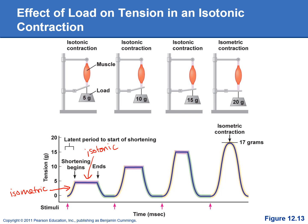With the 10-gram weight, we start shortening and tension stays the same, but we're not able to lift that heavier weight for as long a period of time — which makes sense, because heavier loads can't be lifted as long. We again start off with an isometric contraction where the muscle stays the same length, and once we generate enough force to start lifting the weight and shortening the muscle, tension stays the same and it turns into an isotonic contraction. Then increasing to 15 grams, it takes even more force to overcome that heavier load — again starting isometric in yellow, and then turning isotonic in purple once we start shortening.